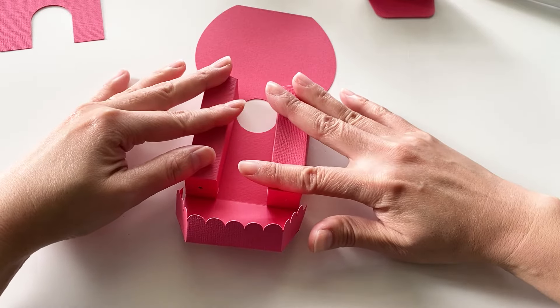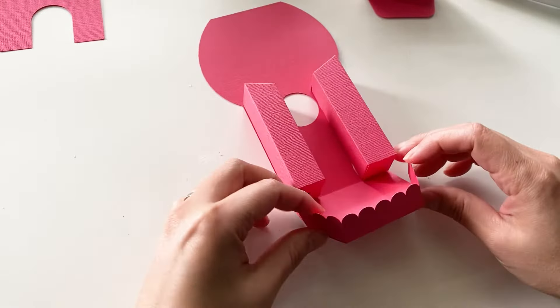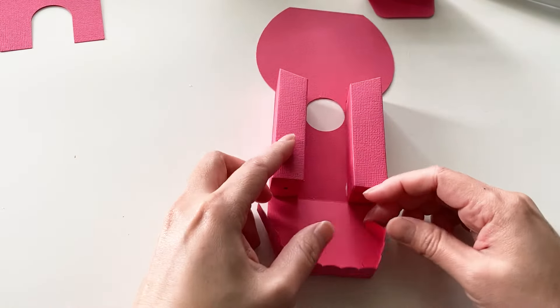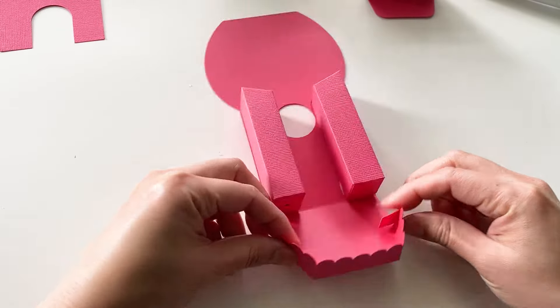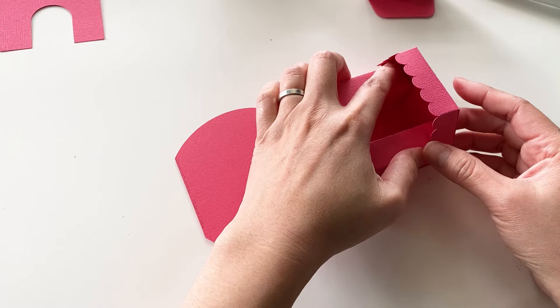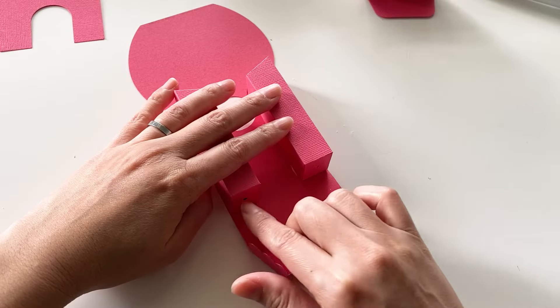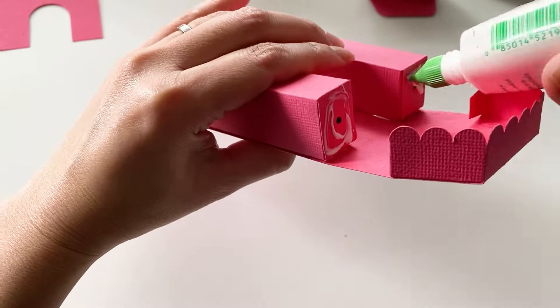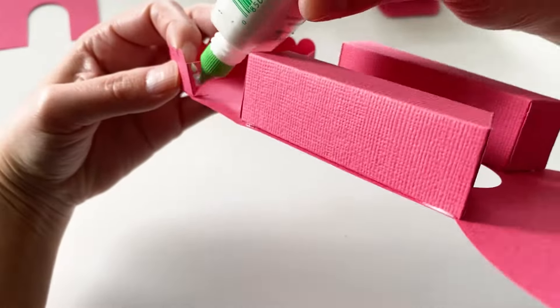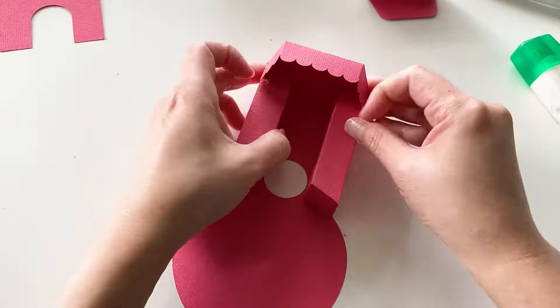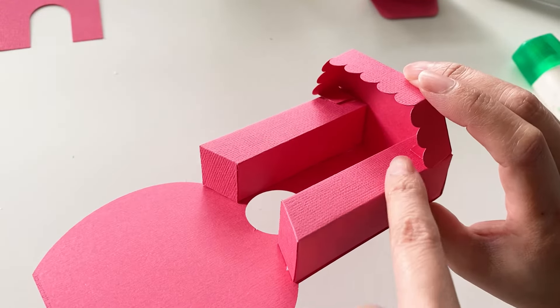Give it a good press. Now we have these two glue tabs. What we are going to do, we are going to fold inward. So when we close it up it will be hidden inside. Apply glue here and on the two glue tabs. Close it up. The two glue tabs are hidden inside now.